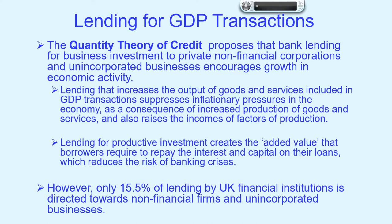The quantity theory of credit proposes that bank lending for business investment to private non-financial corporations and unincorporated businesses encourages growth in economic activity. When businesses borrow money, that leads to investment in new productive capacity, enabling them to increase the output of goods and services, which increases GDP in the economy. That growth in output suppresses inflationary pressures due to the increased production of goods and services.